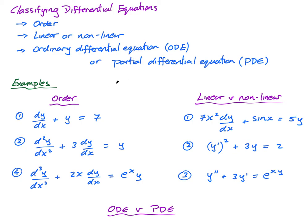First, the order. The order of a differential equation is the highest order of the derivative. So if the highest derivative is the first derivative, it's a first order differential equation. This is a second order differential equation because it contains the second derivative, and this is a third order differential equation because the highest derivative is the third derivative. It doesn't matter if there's a coefficient like 2x to the power of 10 — it's still a third order differential equation.